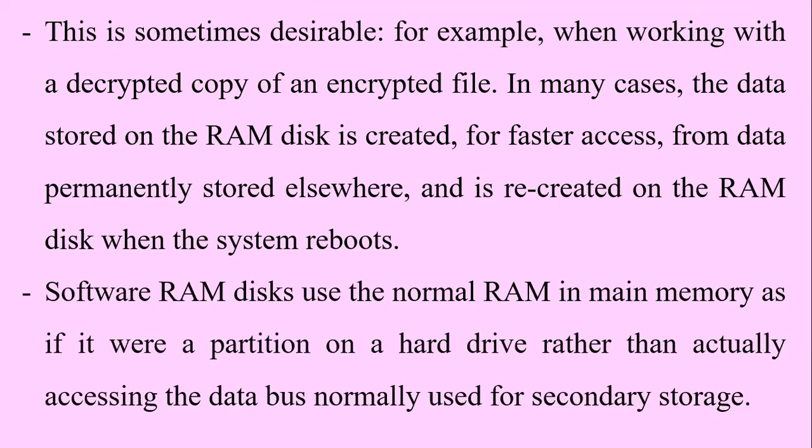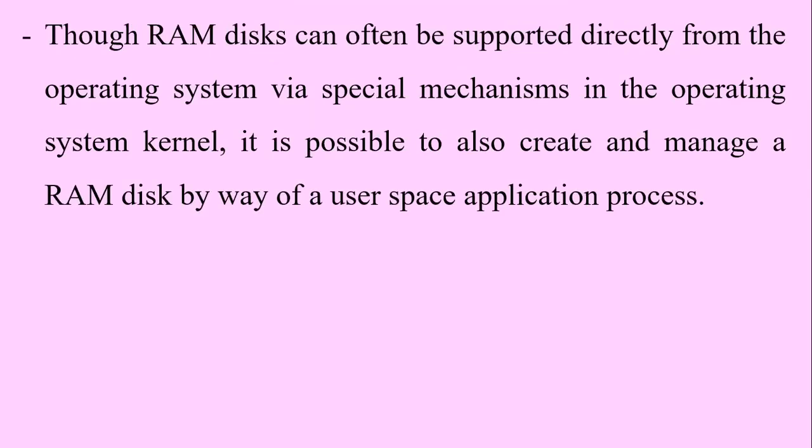Software RAM disks use the normal RAM in main memory as if it were a partition on a hard disk drive, rather than actually accessing the data bus normally used for secondary storage. RAM disks can often be supported directly from the operating system via special mechanisms in the kernel, but it is also possible to create and manage a RAM disk by way of a user space application process.